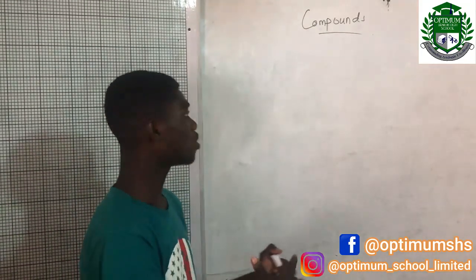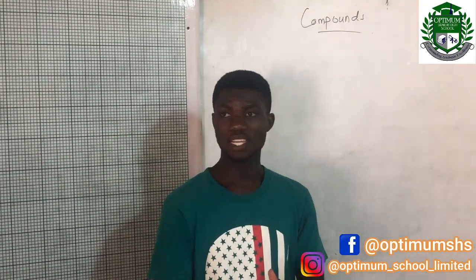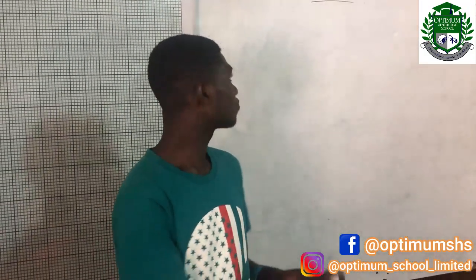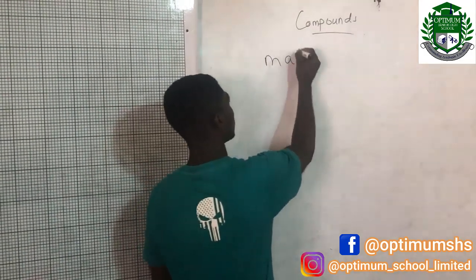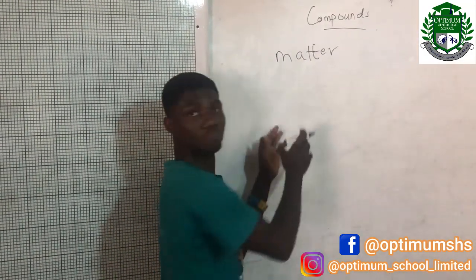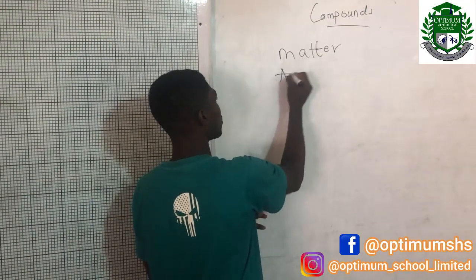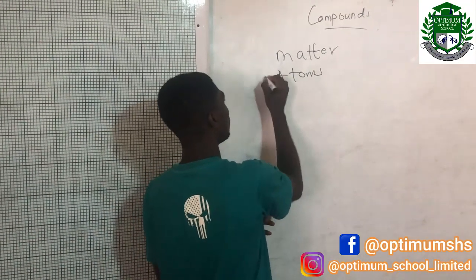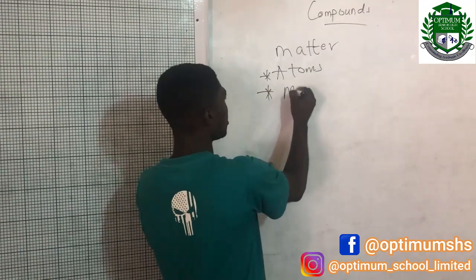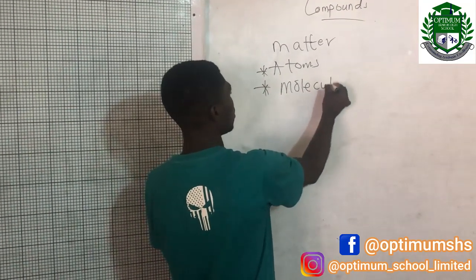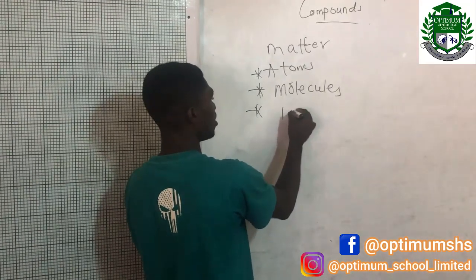Now, what are the building blocks of matter? Everything that we see in this life is made up of something. For example, living organisms are made up of cells. Macromolecules are also made up of their monomers — the small ones. So what are the building blocks of matter? Matter is made up of atoms, molecules, and ions.